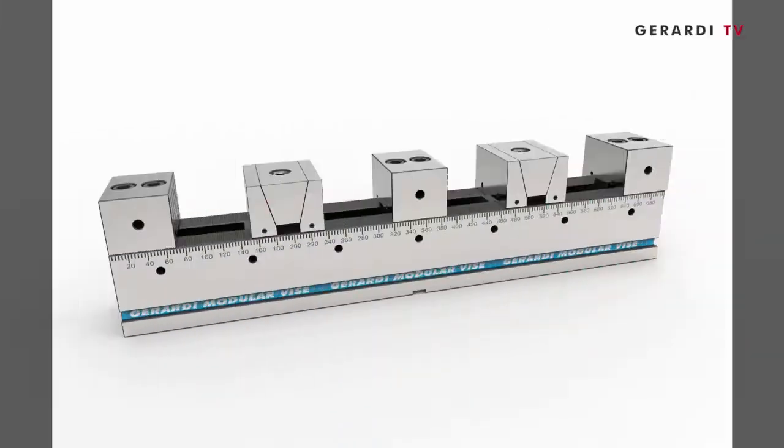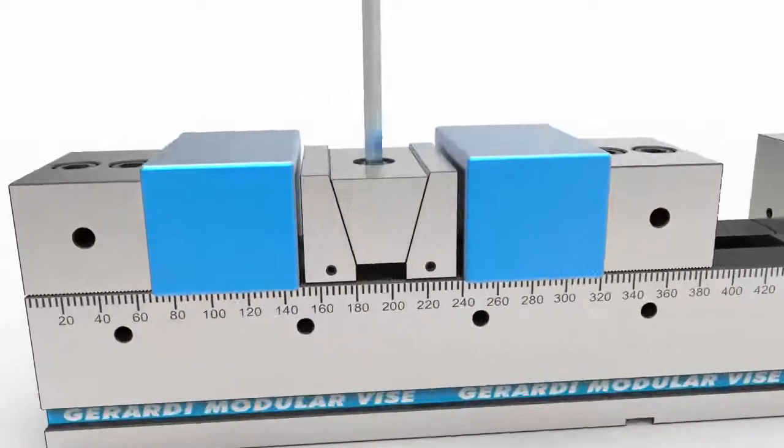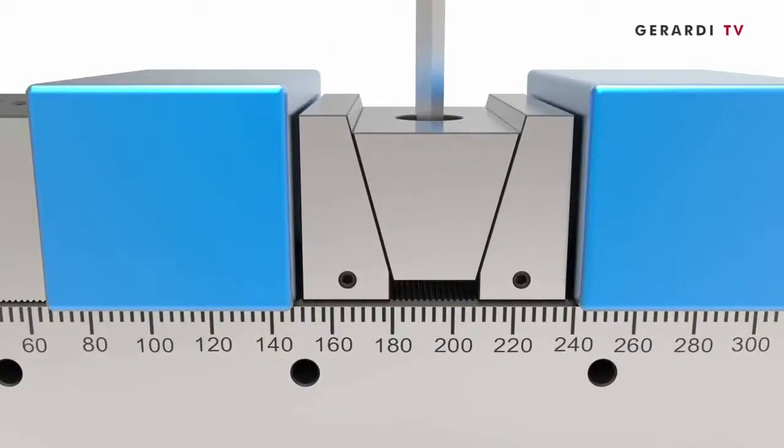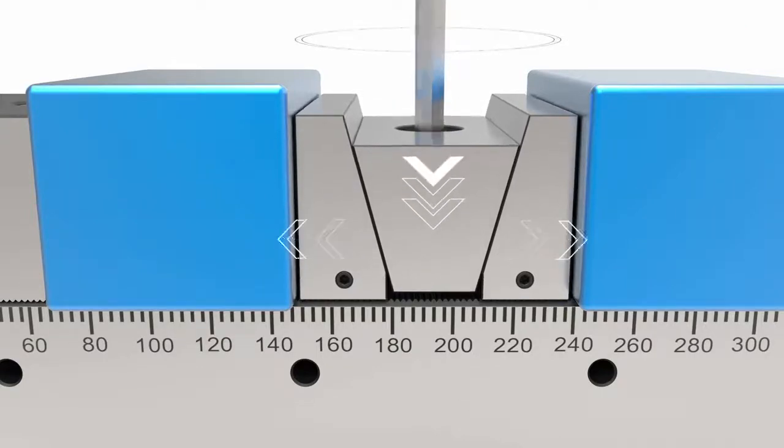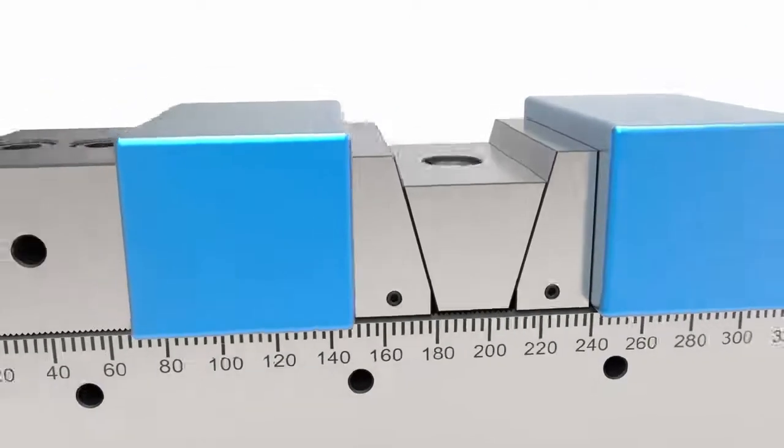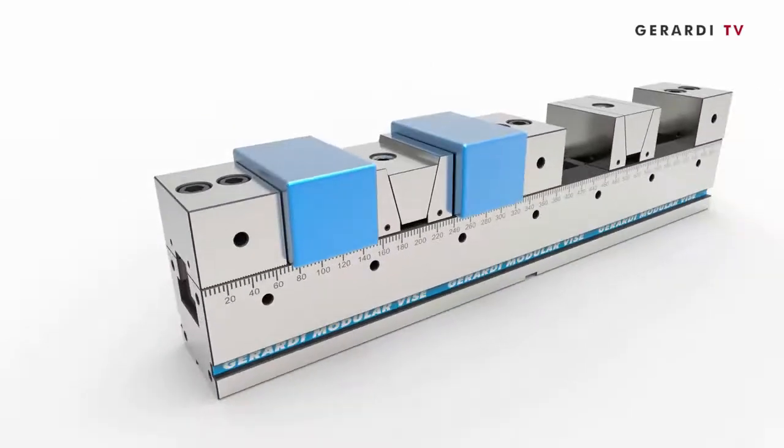A very recent use are the Multiflex double vises which allow, with a single action, the clamping of two workpieces. A downward wedge pushes the jaw plates in opposite directions, clamping in this way two different workpieces.